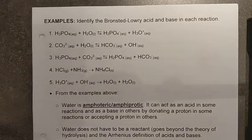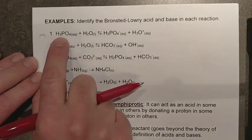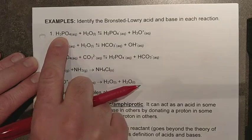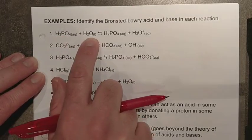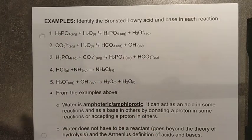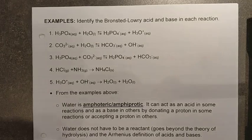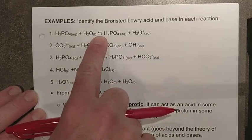All right, let's take a look at these examples. So here you can see that you have phosphoric acid and you have water. All right, phosphoric acid is not one of our six strong acids, so it does exist in equilibrium.